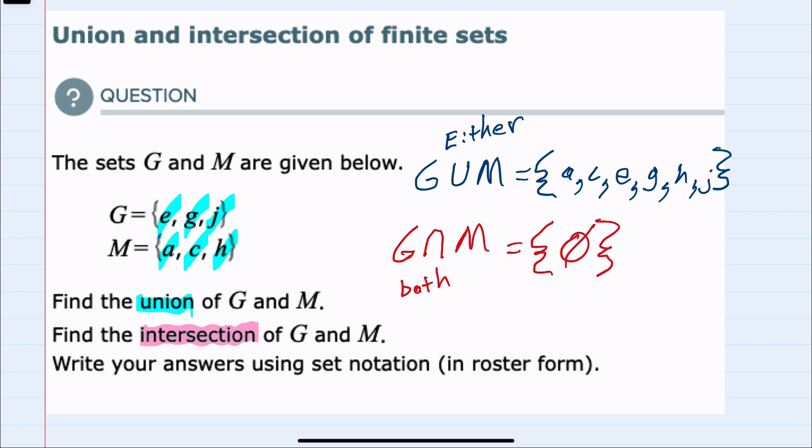Again, the union would be the elements that are in either of the two sets, and the intersection has to be the elements that are in both. In this case we don't have any elements that are in both of the two sets. Thank you.